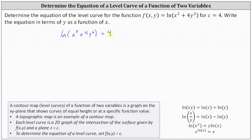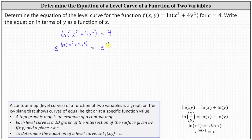Now we need to solve the equation for y. To simplify the left side, we'll use the exponent property e^(ln x) = x. Since our equation is ln(x² + 4y²) = 4, it follows that e raised to the power of ln(x² + 4y²) equals e to the fourth. The left side simplifies to the input of the natural log function, which is x² + 4y².